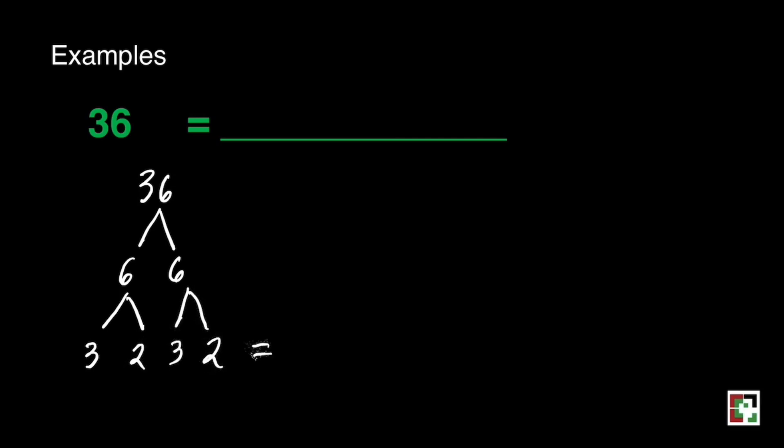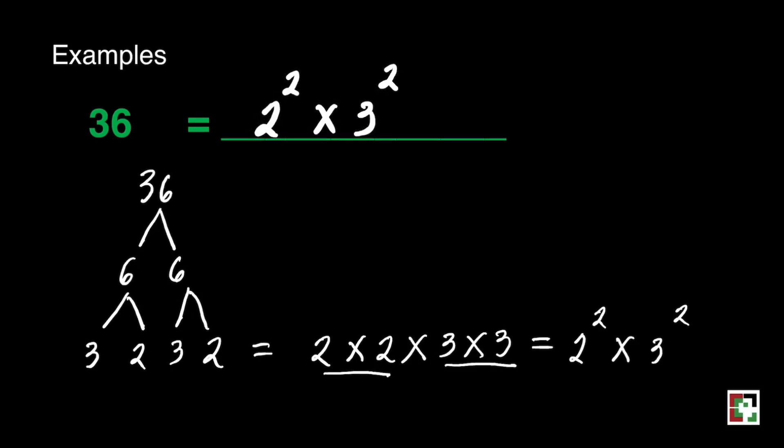We can rewrite this by writing the least number first, going to the biggest number. That's 2 times 2 times 3 times 3. We can rewrite using exponential notation. That's 2 to the second power and 3 to the second power. Our final answer is 2 to the second power times 3 to the second power, or 2 squared times 3 squared.